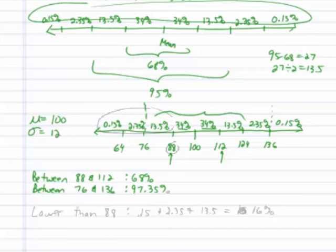We can even do ones like lower than 88. Start at 88 and work your way to the left. Well, it's going to be these three values. So I add 0.15% to 2.35% to 13.5%. And if I add those all up, I get 15. Actually, I get 16% even. Sorry about that.